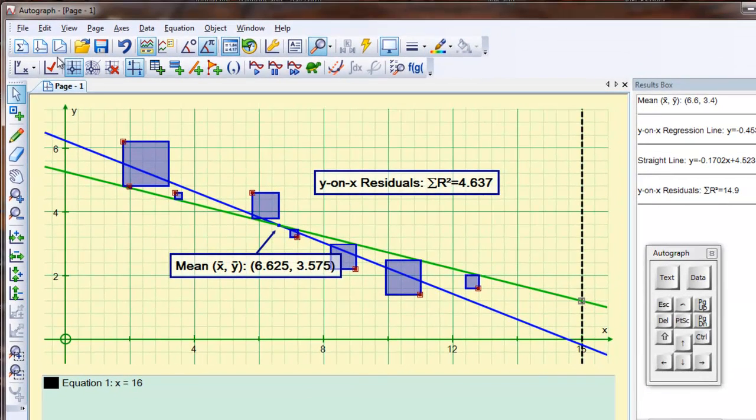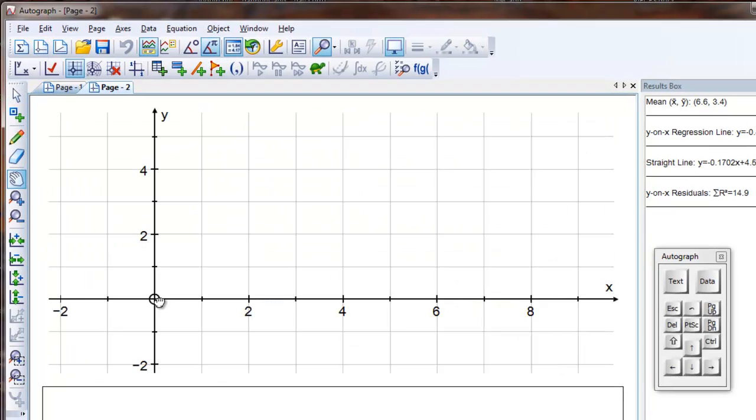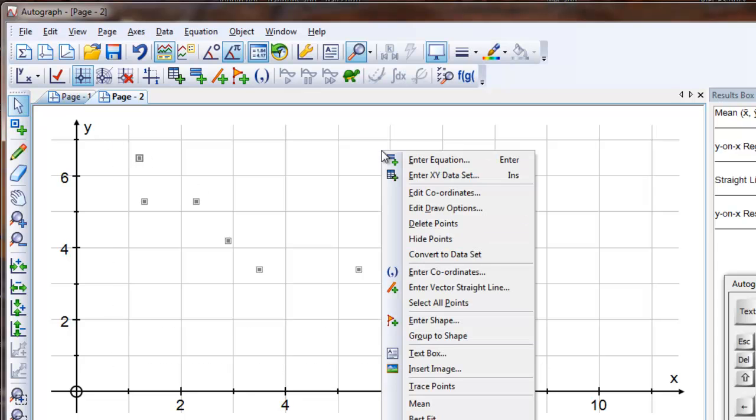Let's start again and start with a fresh page. I'll just create a data set by going to the point mode and just throwing some points on. Not too many. Select mode, select them all, and right click, convert those to a data set.